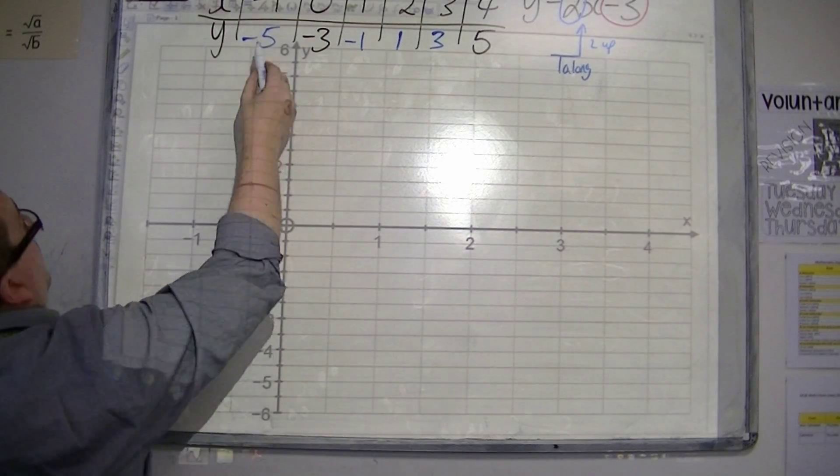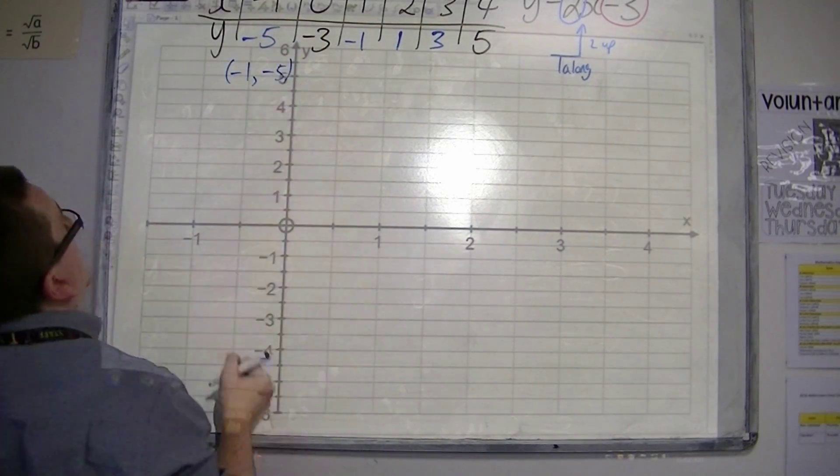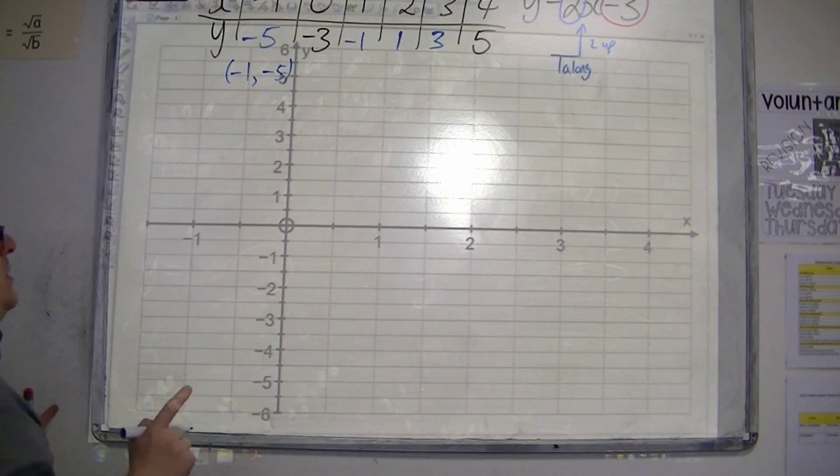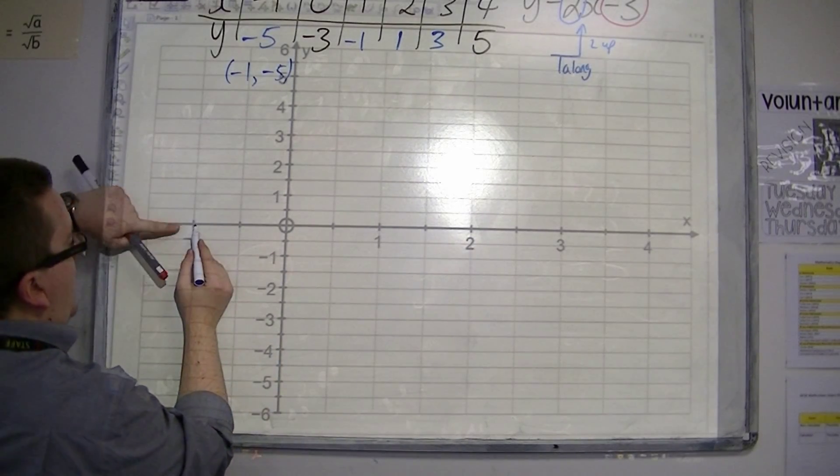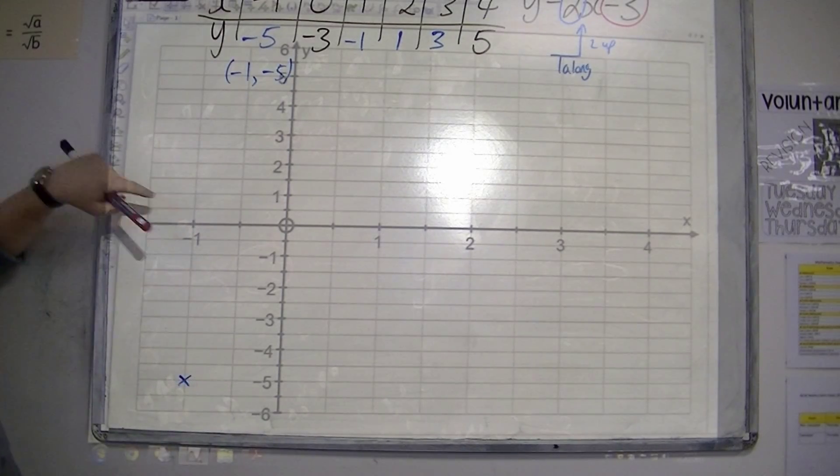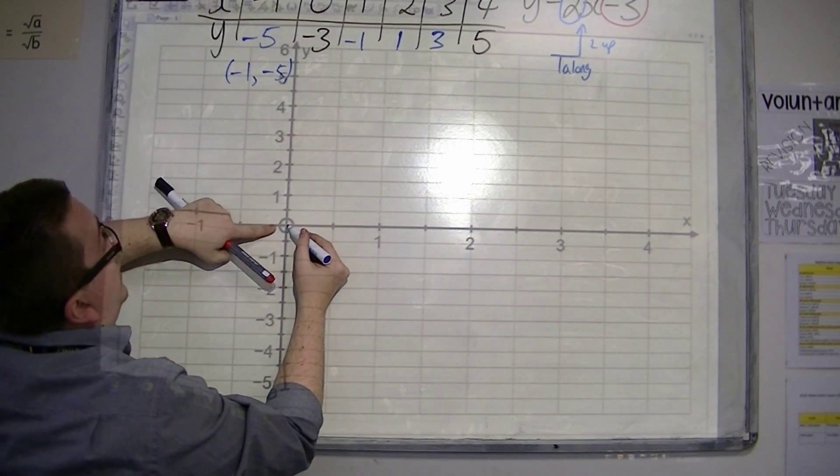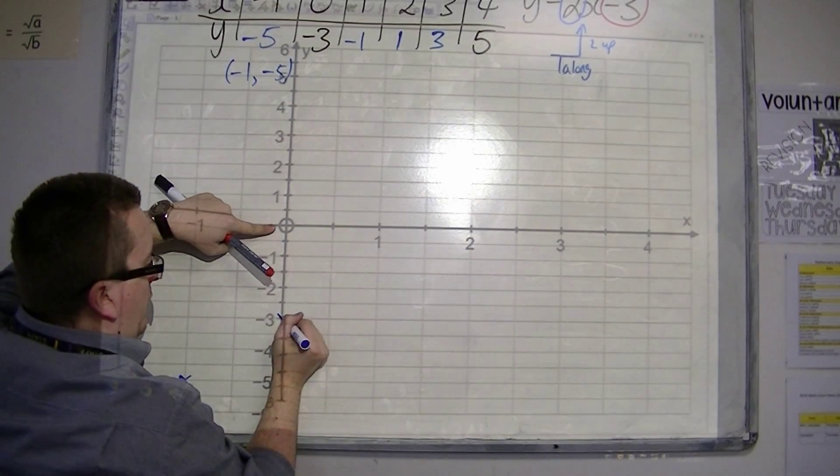So this first one refers to minus 1, minus 5. So I need to plot that point. Minus 1 on the x-axis, minus 5 on the y-axis, plot the point. Now 0 on the x-axis, minus 3 on the y-axis, plot the point.